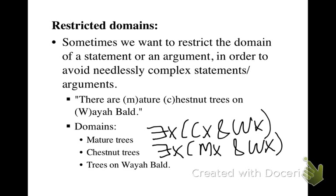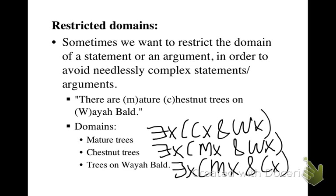And if we restrict the domain to trees on Weyabald, then we would say: there exists an x such that x is a mature tree and x is a chestnut tree.